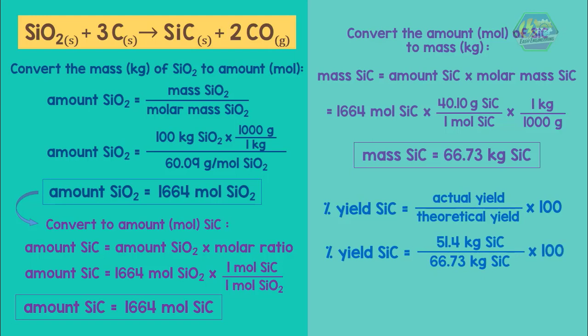Now we can say that we have a 77 percent yield of silicon carbide if we process 100 kilogram of sand.